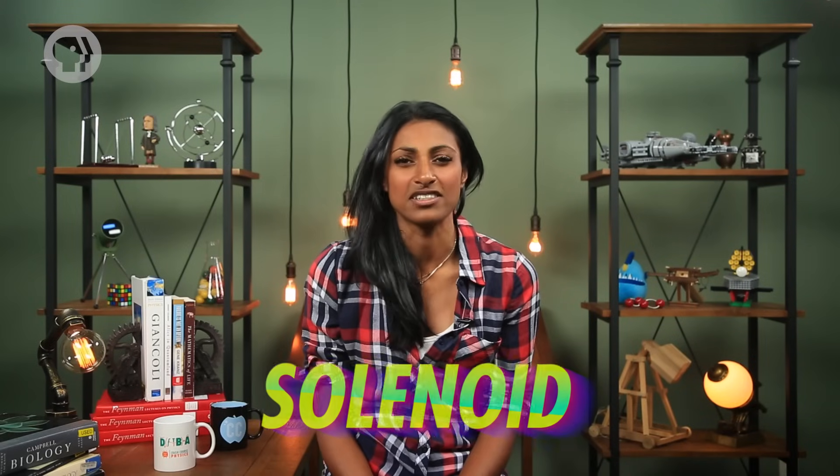So the two parallel wires attracted and repelled each other because of the magnetic field created by the current. What about the coil of wire that turned into a magnet? Well, you can probably guess that its behavior also has to do with the magnetic field produced by a current. See, that coil of wire is a special shape called a solenoid. And when a solenoid has a current running through it, it produces a magnetic field,